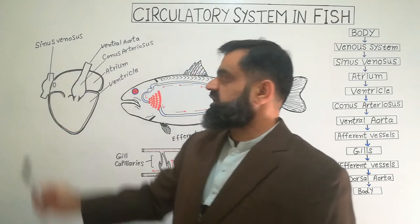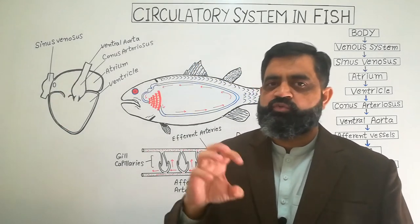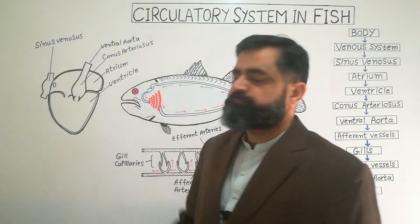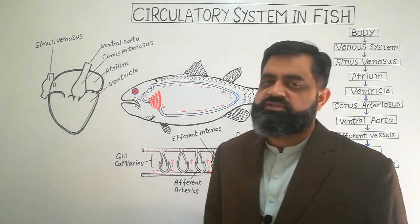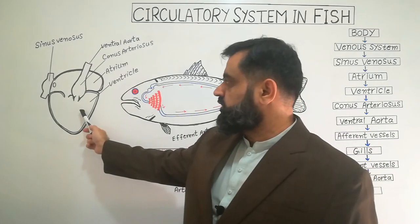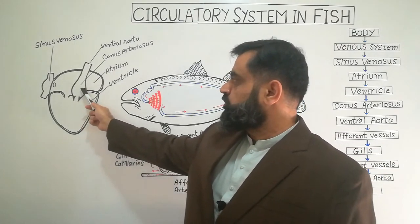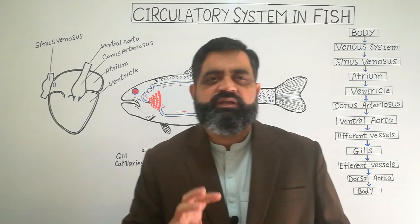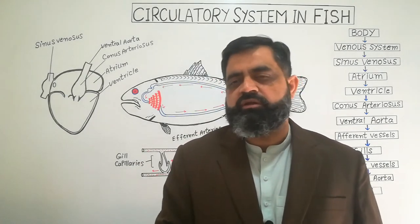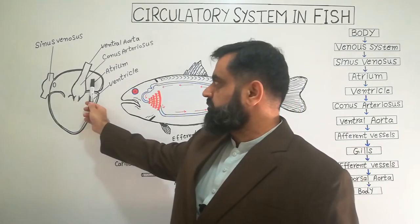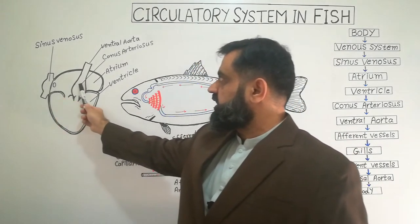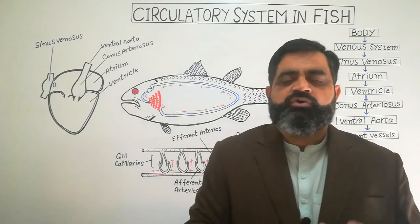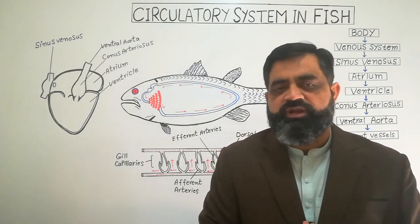If you look at the diagram, the heart consists of a small chamber known as the sinus venosus, which brings deoxygenated blood toward the heart. When it contracts, blood moves into the atrium. When the atrium contracts, blood goes into the ventricle. When the ventricle contracts, blood moves into the conus arteriosus, and then into the ventral aorta. So technically there are two chambers — atrium and ventricle — but some zoologists consider sinus venosus and conus arteriosus as additional chambers, making four in total.